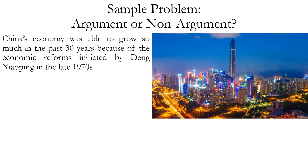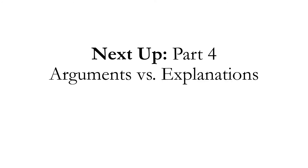Another example: China's economy was able to grow so much in the past 30 years because of the economic reforms initiated by Deng Xiaoping in the late 1970s. Is this an argument or not? The answer is no — it's reporting information which could be true or false, but it's not trying to prove one claim based on another. Next up, Part 4: Arguments versus Explanations, where we give additional information on how to tell the difference between arguments and explanations — which can sometimes be tricky because explanations can include words like 'because,' which are sometimes premise indicator words, but sometimes just explanation indicators.